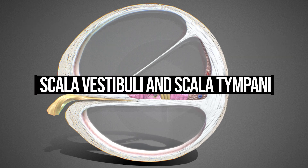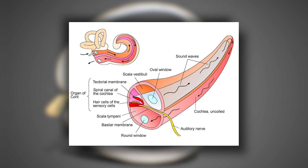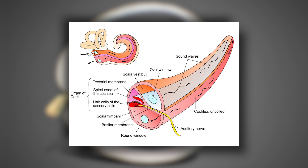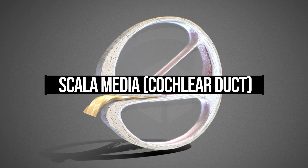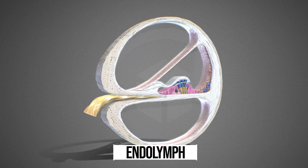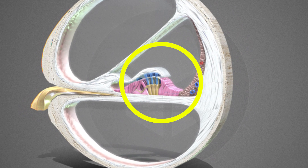The scala vestibuli and scala tympani are filled with a fluid called perilymph, similar in composition to cerebrospinal fluid. The scala vestibuli begins near the oval window, where the stapes transmits sound vibrations into the cochlea, while the scala tympani ends at the round window, allowing for fluid displacement within the cochlea. The scala media contains a different fluid called endolymph, which is rich in potassium and crucial for the transduction process, and houses the organ of Corti, the sensory organ of hearing.